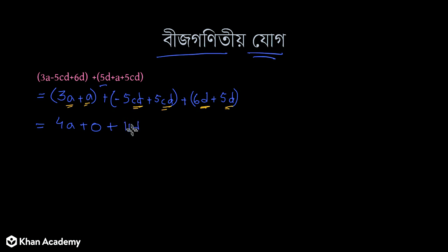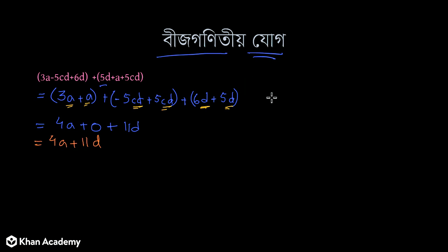Five plus five is ten, and since in algebra zero is not written, we drop the zero. So we write here. If we arrange those terms together, our answer comes to 4A plus 11D. Now this is the combined result. We write 3A minus 5CD plus 6D, then similarly the next group side by side.